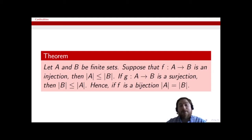Using these together, if I have a bijection from A to B, then it has to be the case that the cardinality of A is equal to the cardinality of B. Since it's one-to-one, the cardinality of A is less than or equal to the cardinality of B, and since it's onto the cardinality of B is less than or equal to the cardinality of A, hence they have to be precisely the same.